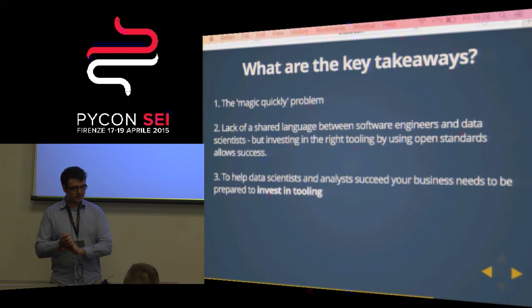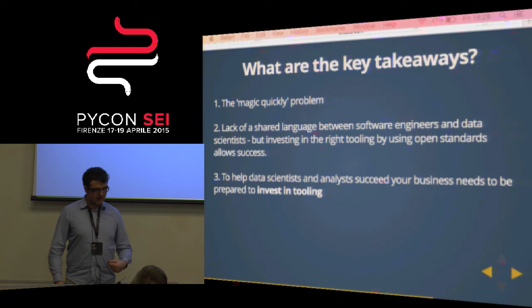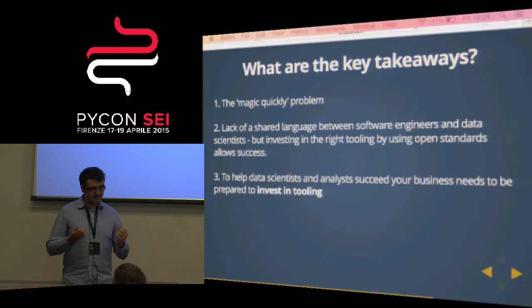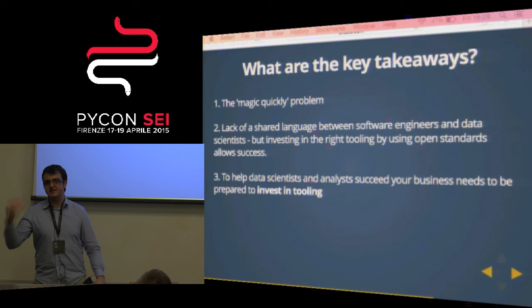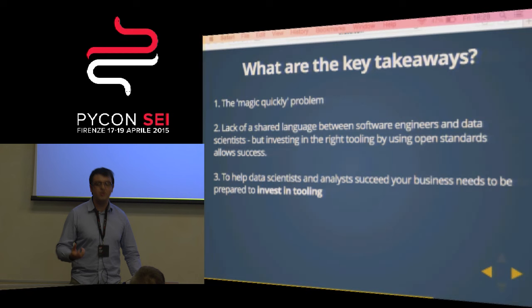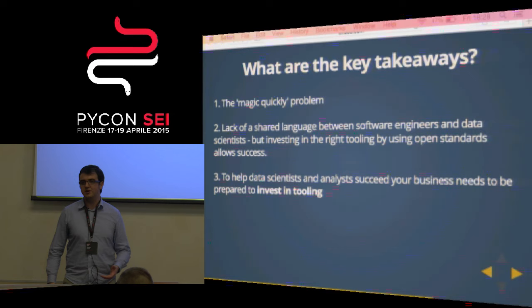What are the key takeaways? First, the 'magic quickly' problem — borrowing this from Ian Oswald — people expect models to be developed very quickly like a web development project. Second, lack of shared language between software engineers and data scientists. Investing in the right tooling really helps to allow success here. Third — aimed at CFOs — if you want to help your analysts succeed, your business needs to invest in tooling. Otherwise this analysis just sits inside the brain of an analyst or on a presentation, and never goes into the tooling that people are actually looking to use.